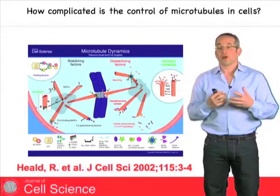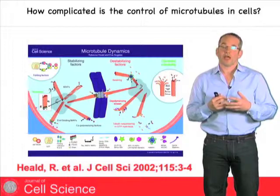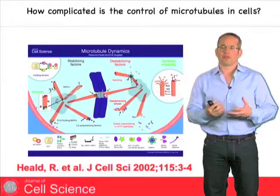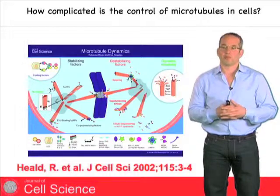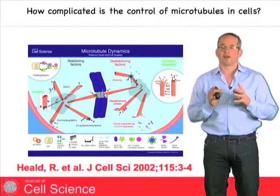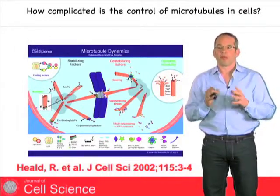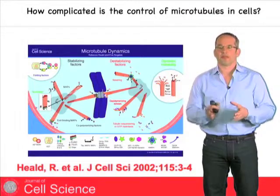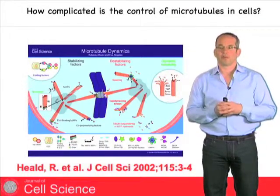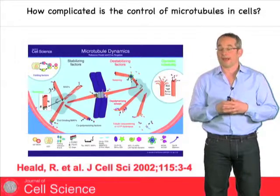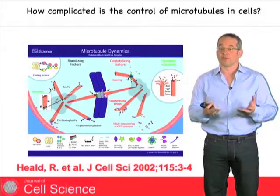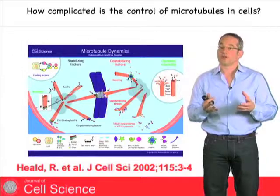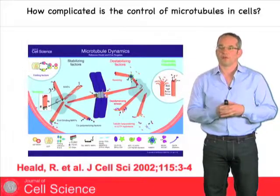So we decided to ask: how complicated is the growth of microtubules in a C. elegans embryo? We decided to focus on one particular problem, which is how many proteins are required to make the plus end of a microtubule grow fast through the cytoplasm. If you remember, it grows about 10 times faster in vivo than it does in vitro. So you can ask, how many proteins are required to do that?